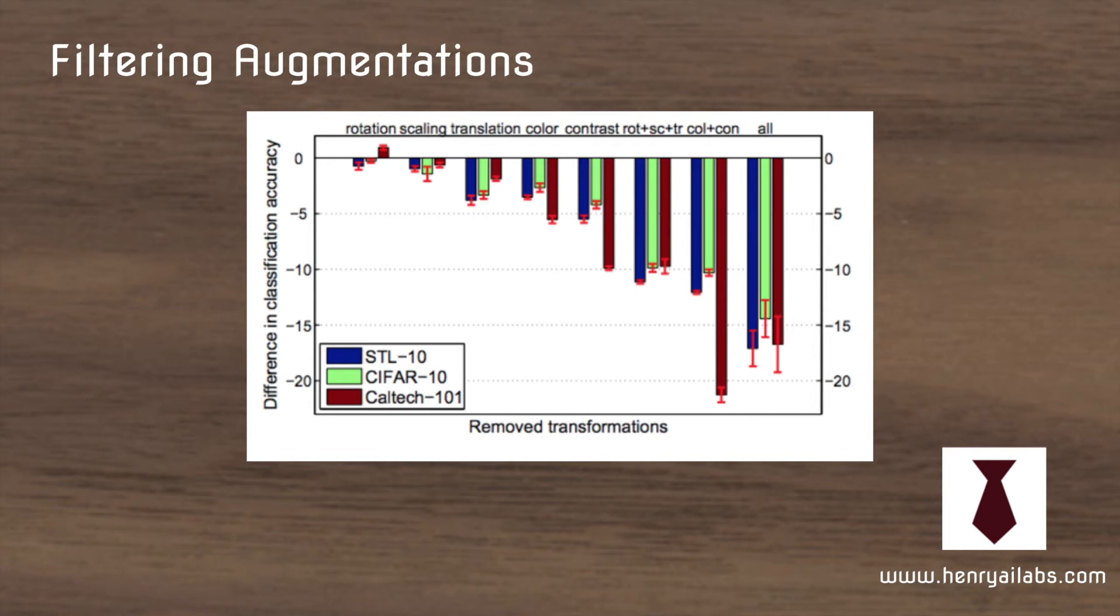So the plot shows that using all of the set of transformations they had resulted in the best performance on average.